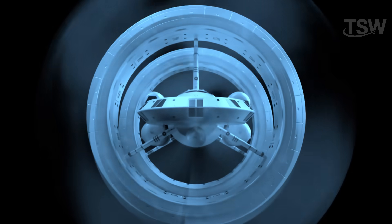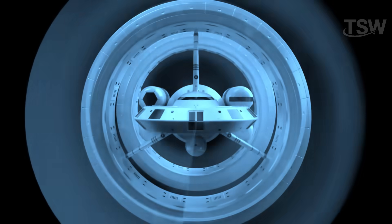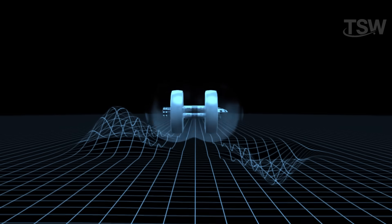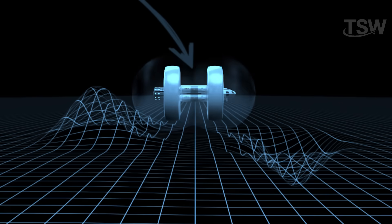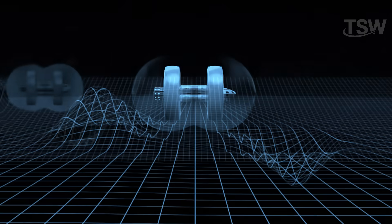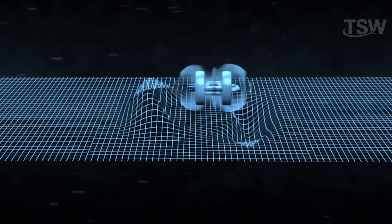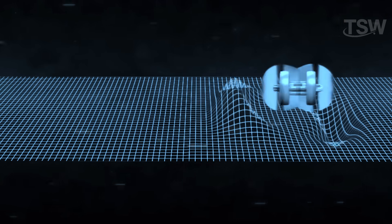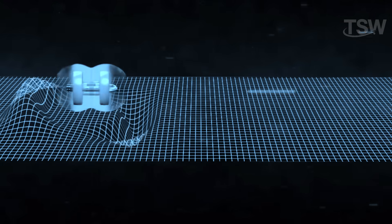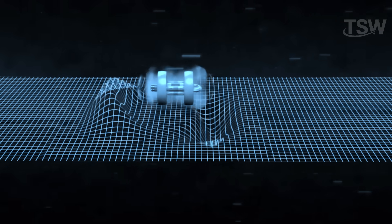From the crew's perspective, the trip would feel like coasting gently through space. But from an outside point of view, the bubble would be flying at a speed faster than light. And here's a key point. This idea doesn't break the laws of physics because the spacecraft itself never actually moves faster than light. It's the bubble of space that moves. The ship is essentially standing still in a wave of warped space-time.